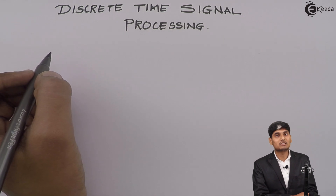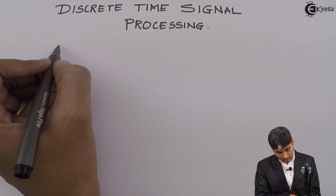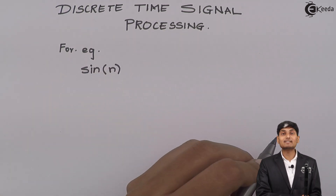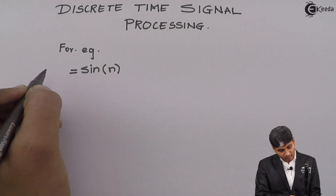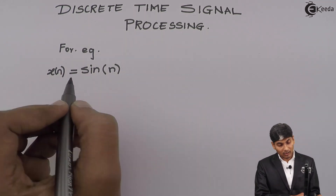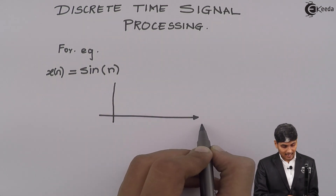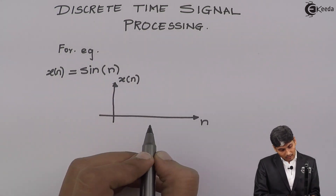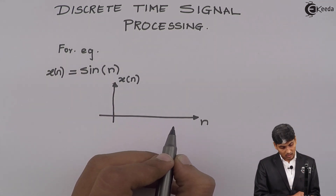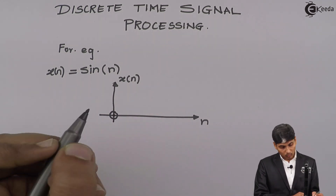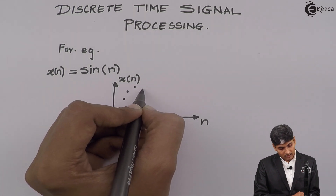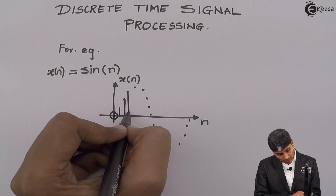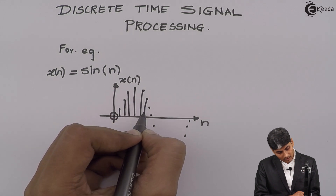Discrete time signals are those signals which occur at particular instants of time. For example, I have a sine wave varying with respect to a variable called n. So I write it as sine of n, which is a function x of n. The function will be plotted with n on the x-axis and x of n on the y-axis. Then I will put integer values of n as 0, 1, 2 and so on. When I put 0 it is sine 0, and it will start incrementing in a sinusoidal fashion. Here I am purposefully not drawing a complete envelope but only at particular instants.